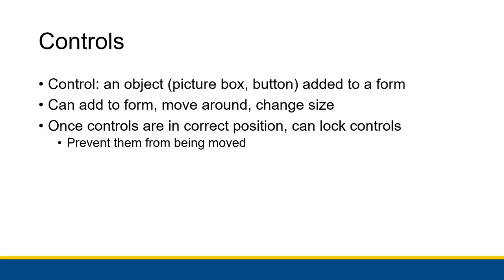Controls refer to an object — like a picture box or a button — that is added to a form. For the Einstein example, the controls might be the equation picture and each individual button: Show Equation, Hide Equation, and Exit. All of those are controls. You can add them to a form, move them around, and change their size. You're also able to lock controls once they are in the correct position, which prevents them from being accidentally moved again.